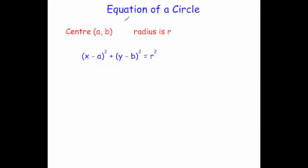This video is an introduction to the equation of a circle. The equation of a circle is x minus a, all squared, plus y minus b, all squared, equals r squared. Where a is the x-coordinate for the center, b is the y-coordinate for the center, and r is equal to the radius of the circle.